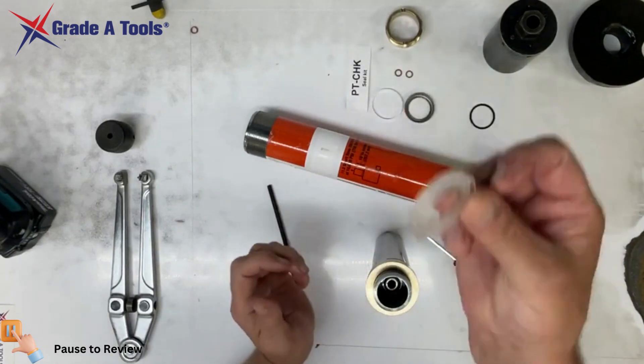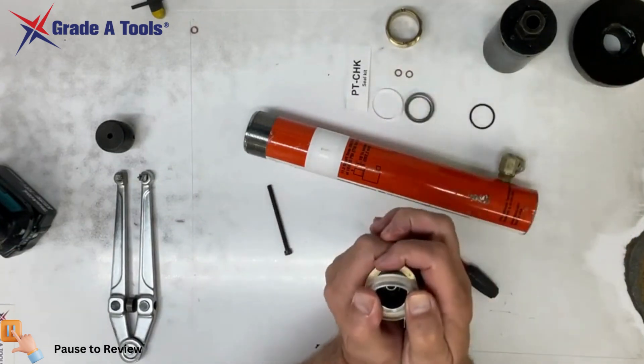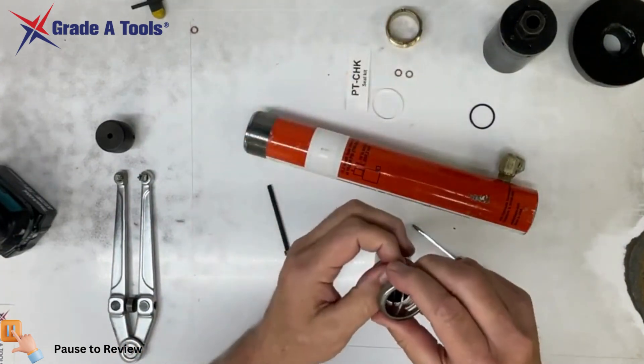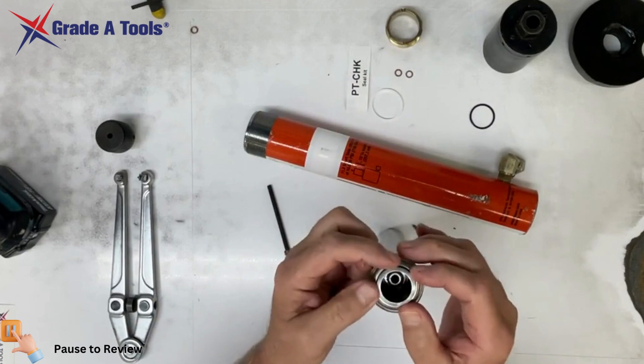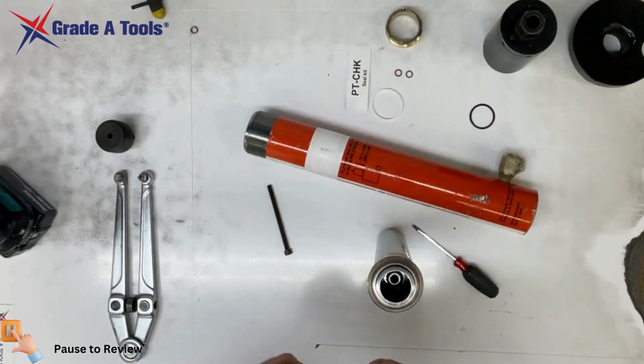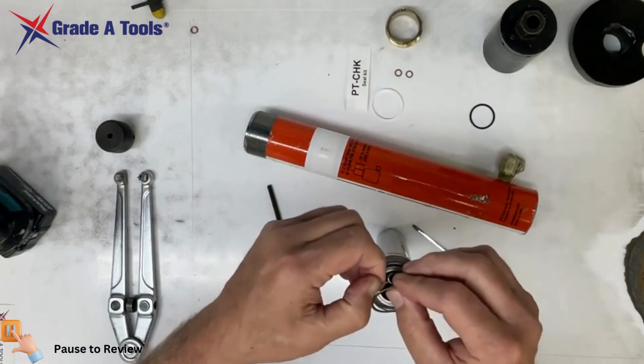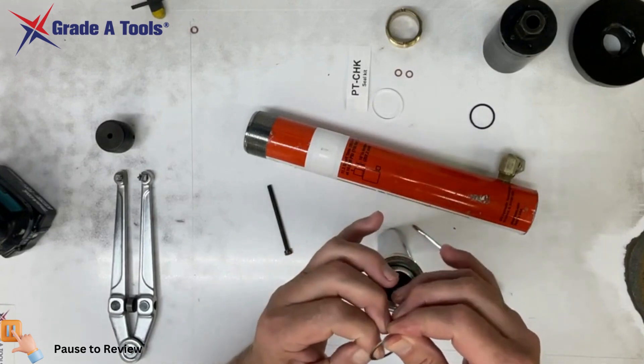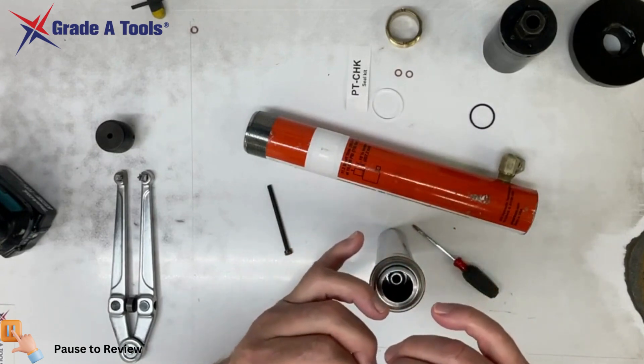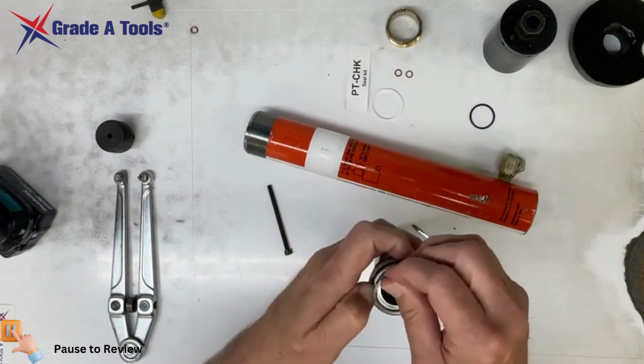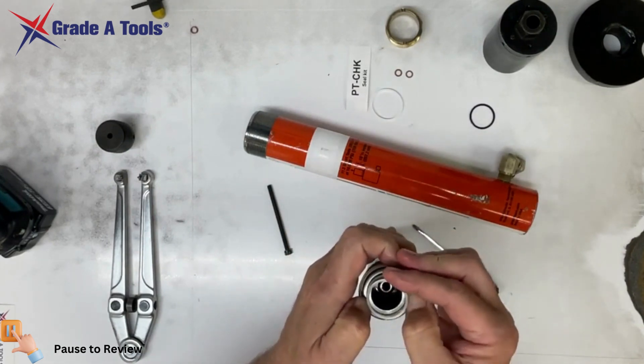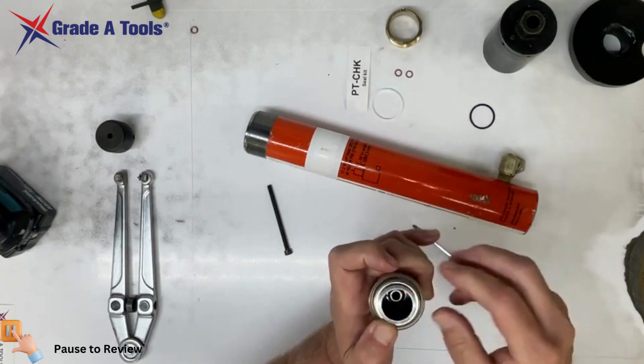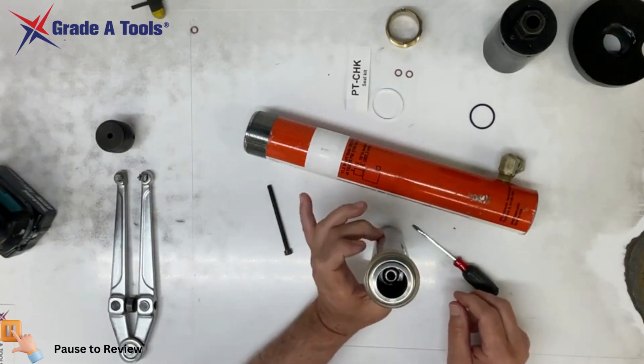Going back with your seal, we'll put your seal on. You'll put your brass retaining ring on, and then you'll put your spiral snap spring back on here. Now your seal has been replaced.